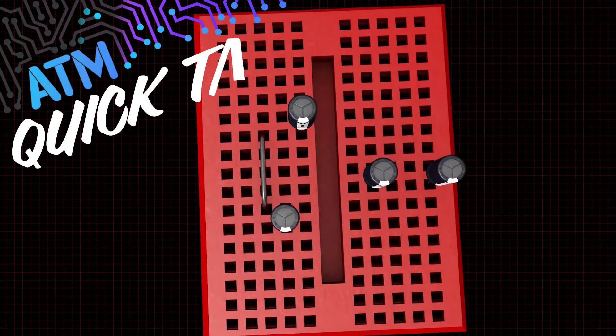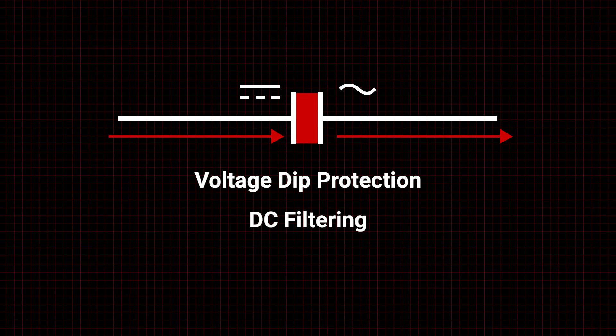Capacitors store energy. Once charged, capacitors block DC current and pass AC current, making them useful for voltage dip protection, DC filtering, and filling in AC ripple.